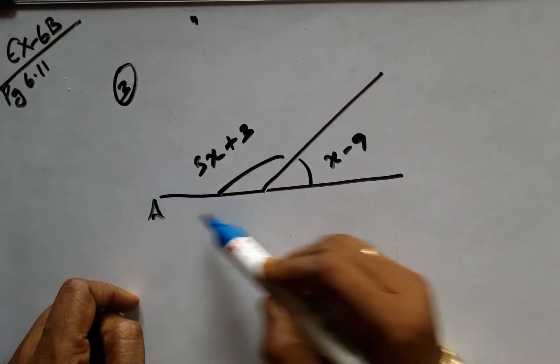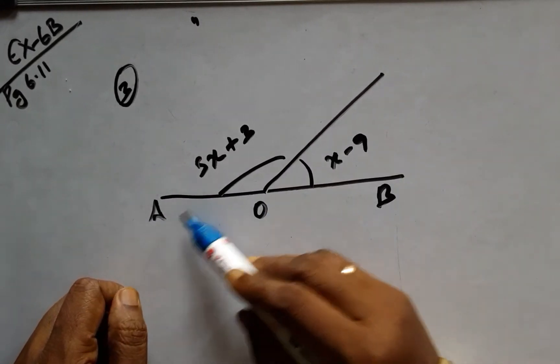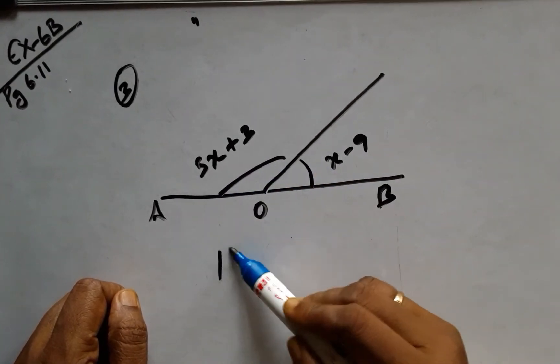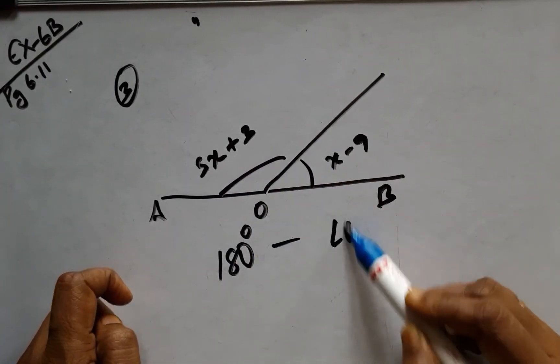Once again, we have been given that AOB is a line, which means to say that the sum of these two angles is 180 degrees and they form a linear pair.